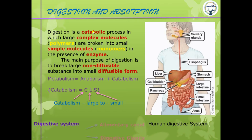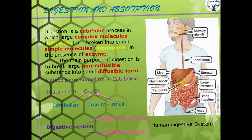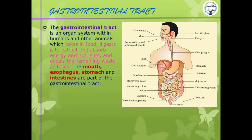The digestive system is the organ system which performs digestion. It is broadly categorized into two categories: first, the alimentary canal or GI tract, and second, the digestive glands. The GI tract stands for gastrointestinal tract — gastro refers to stomach and intestinal refers to intestine.